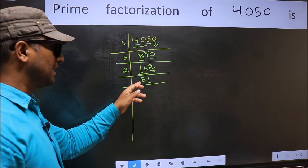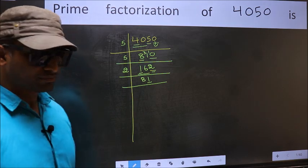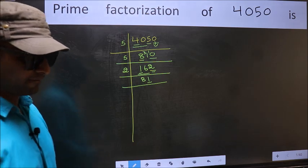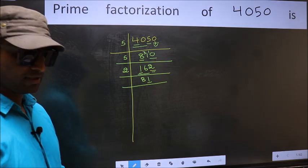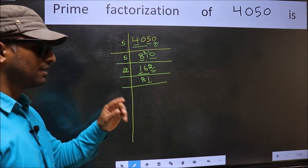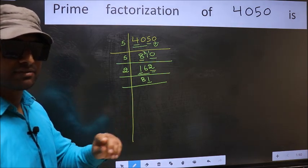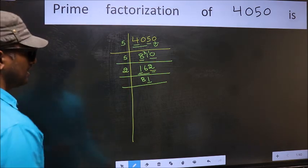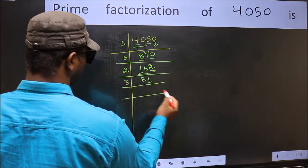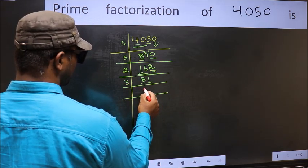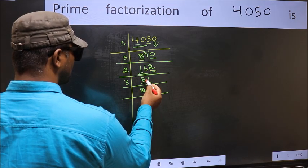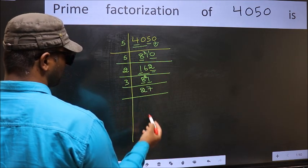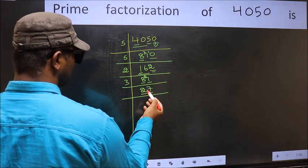8 plus 1 we get 9, and 9 is divisible by 3, so this number is also divisible by 3. So take 3 here. First number 8 — a number close to 8 in the 3 table is 3 twos are 6. 8 minus 6 is 2, carried forward: 21. When do we get 21 in the 3 table? 3 sevens are 21.